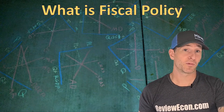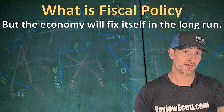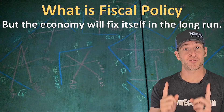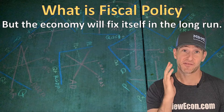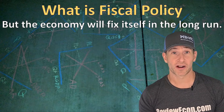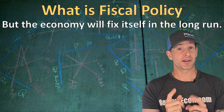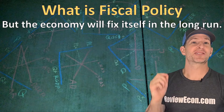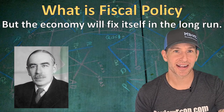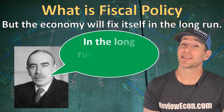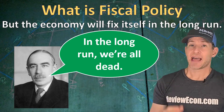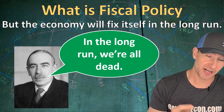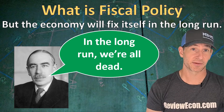You might remember that the economy will fix itself, because in the long run wages and other resource prices are flexible — that's why we have a vertical long-run aggregate supply curve — and in the long run we will get back to full employment output. But according to John Maynard Keynes, the founder of modern economics, in the long run we're all dead. That's where fiscal policy can speed up the process, returning us to long-run equilibrium more quickly.